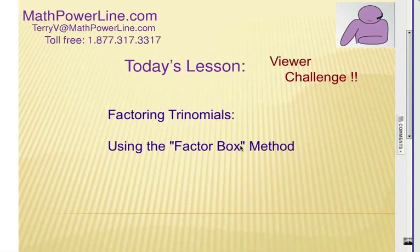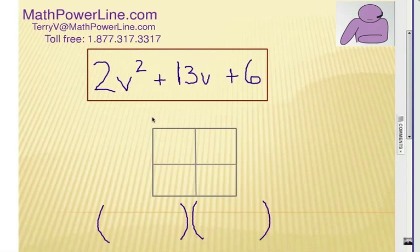Alright, here's what the factor box method is all about. Let's look at the first example, it's 2v² + 13v + 6.